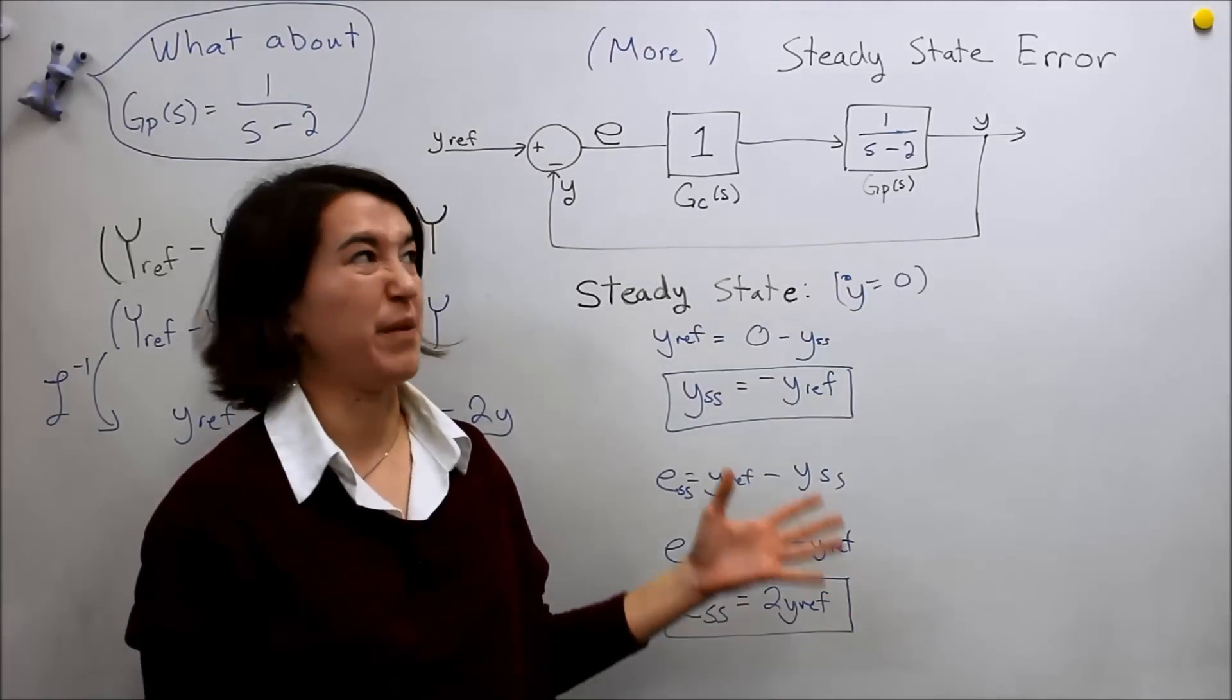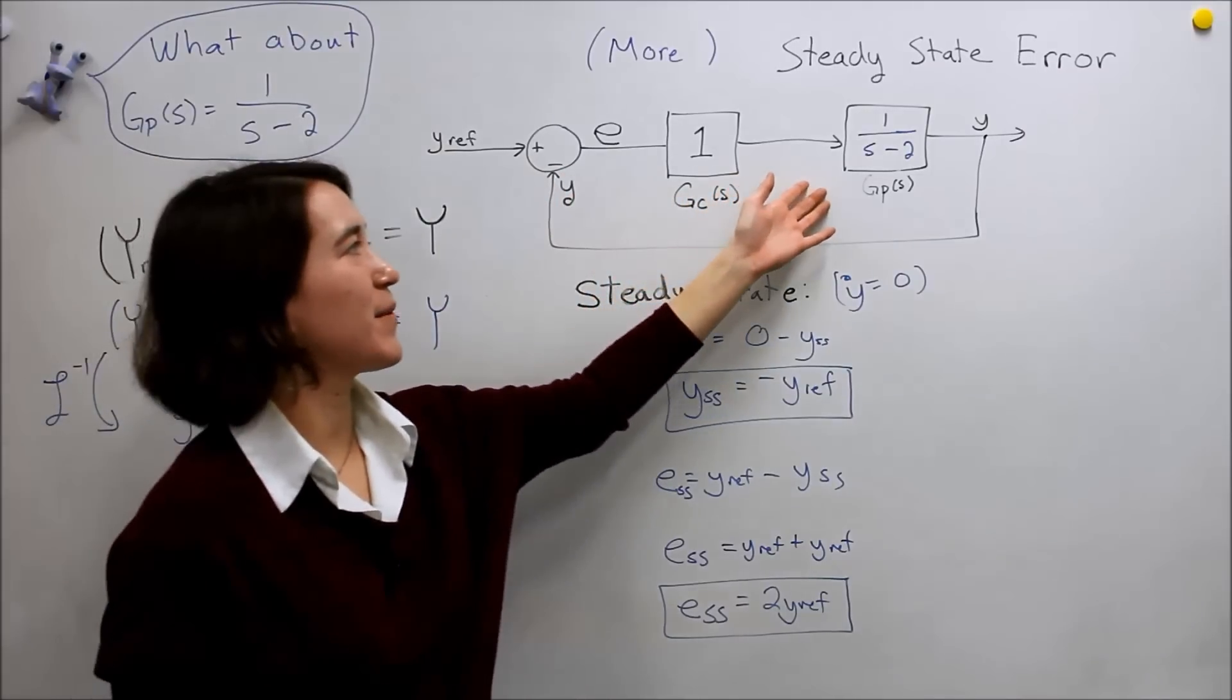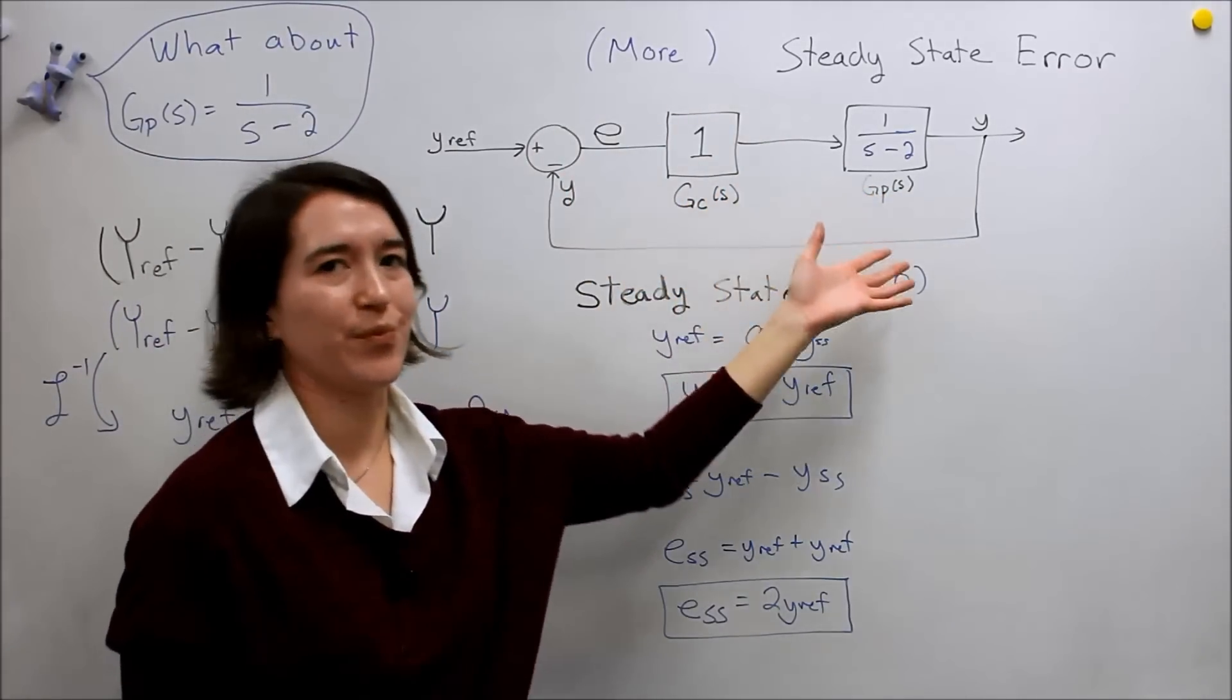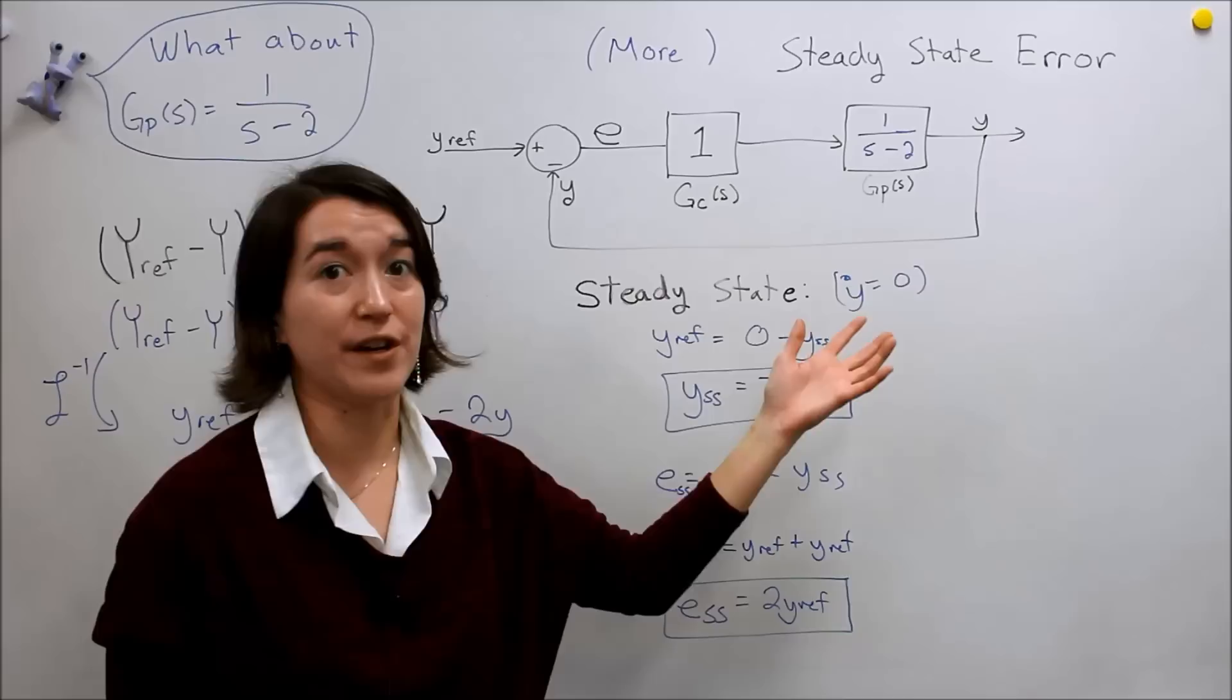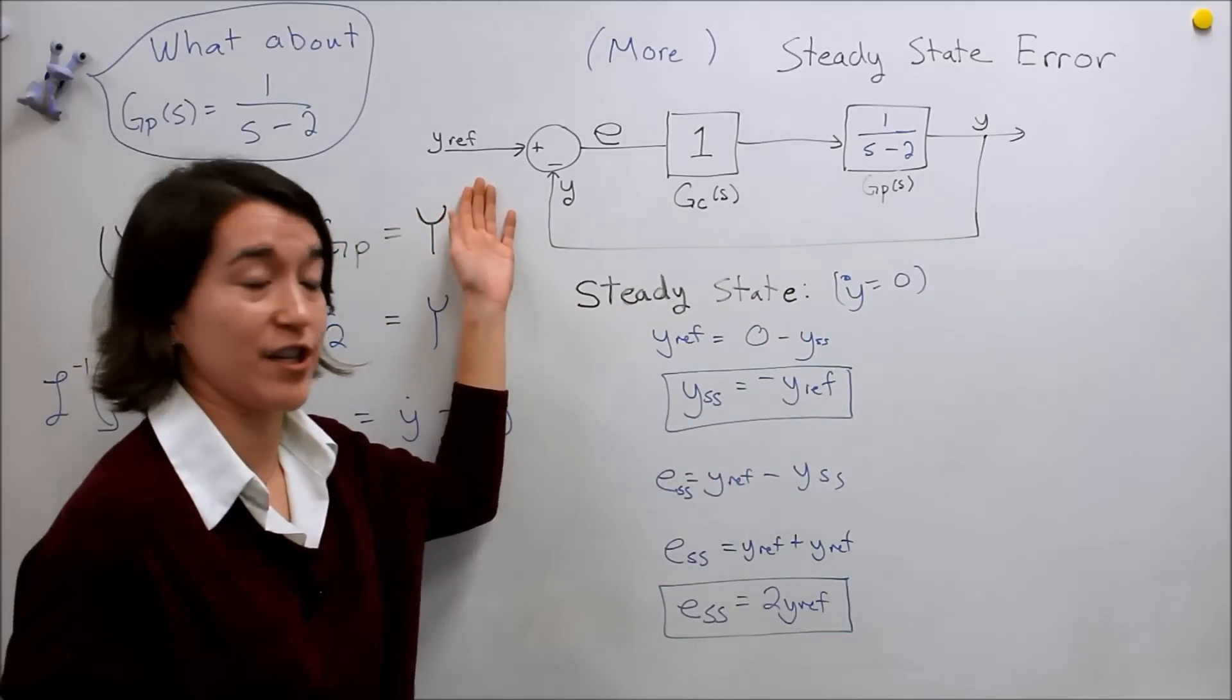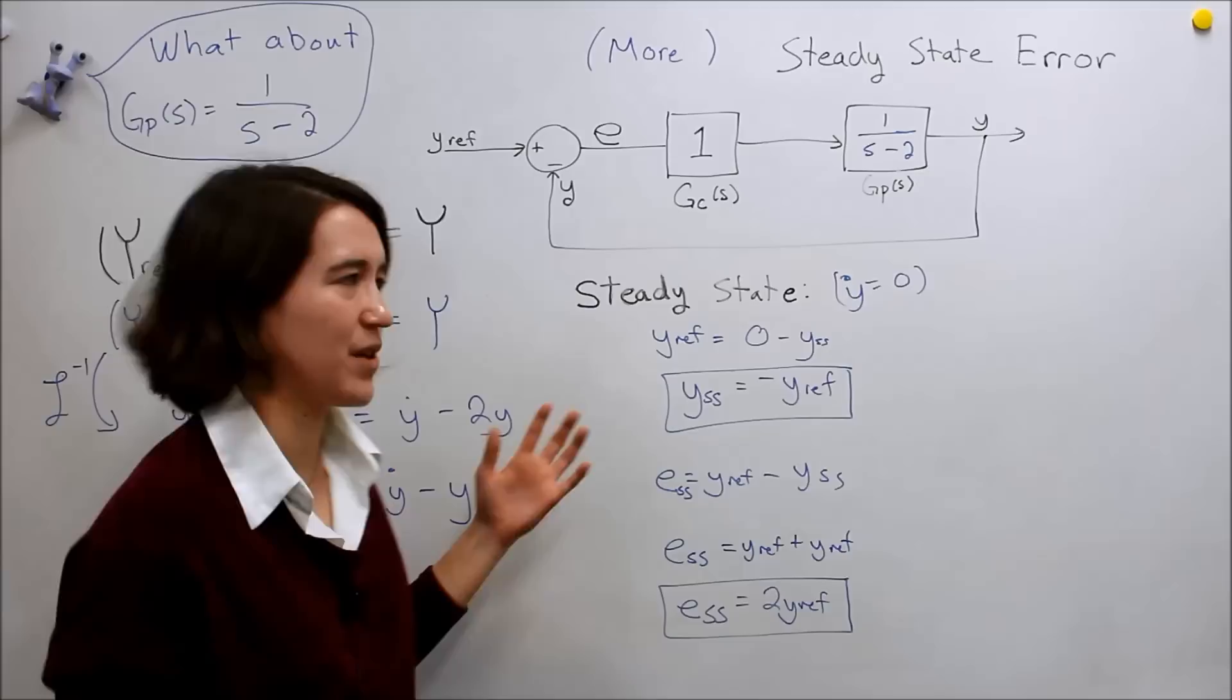So we just saw in MATLAB that with our system, we had an unstable system, our overall control loop actually is also unstable, and so I had our system go off into infinity when we put in a step function here. And so the question is, what do these steady state values mean? Because we calculated them.